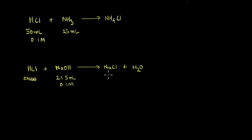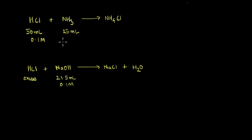We get complete neutralization. So now using this information, how can we calculate the concentration of NH3? If we start with this reaction, we know that all of this 25 ml of ammonia was consumed. To calculate the concentration of ammonia, we need the volume of ammonia, which is given, and we need to know the number of moles of ammonia consumed in this reaction.